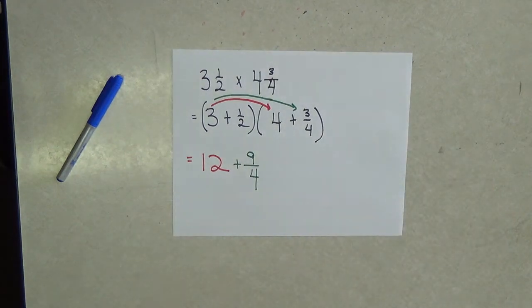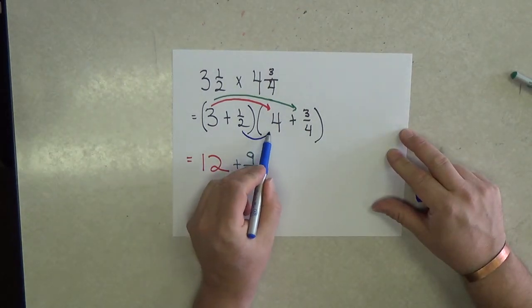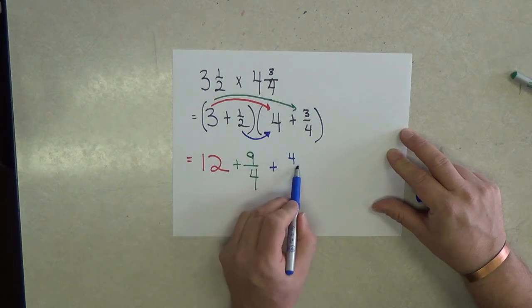Our next partial product will come from the second addend in the first factor, that's the half, half times 4. So that's going to give me 4 halves.